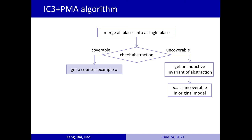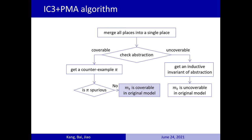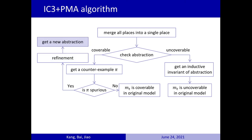Otherwise, if coverable in abstraction, we can get a counterexample pi, and then check whether this counterexample is spurious. If not, we have that MT is coverable in the original model. If spurious, we need to refine the current abstraction according to the spurious counterexample, and continue to check the new abstraction until IC3 plus PMA ends.